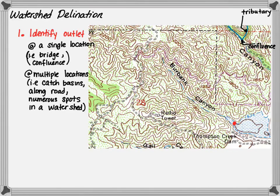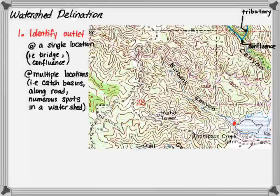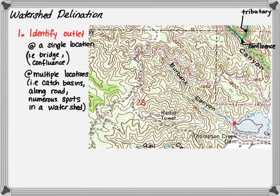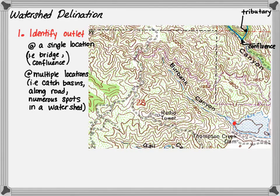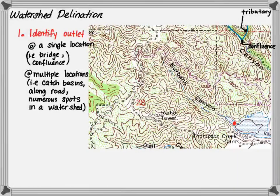Many times the outlet is not a single point but multiple points. At times you are designing a roadway and you need to know the flow at each of the catch basins to make sure that you can intercept the flow. You also want to know the flows in the road so you can reduce the spread of water, or you're interested in flows at various points in the watershed, such as for a development project.